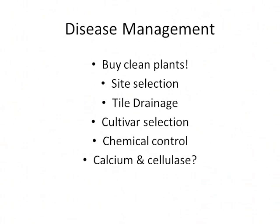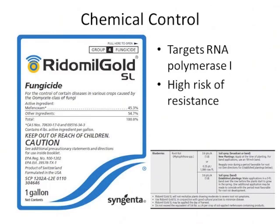We do have chemical controls available. For the agronomists in the room, we've got Ridomil Gold, which is mefenoxam. This targets RNA polymerase, it's pretty potent stuff, and it's applied directly to the soil. There is a high risk of resistance — with repeated applications, maybe two to three years in, you can start to get resistance developing.